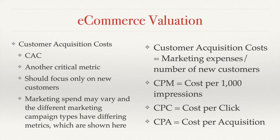Customer acquisition cost, or CAC, is another critical metric. It should focus only on new customers and is calculated as marketing expenses divided by the number of new customers. There are a few other important acronyms to be aware of: CPM is the cost per thousand impressions — you're paying for your advertising every time someone is shown your ad, and once there have been a thousand impressions, that costs you money even if they take no action.